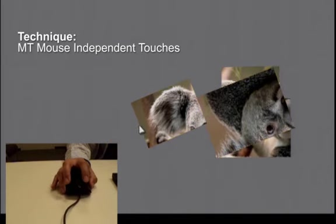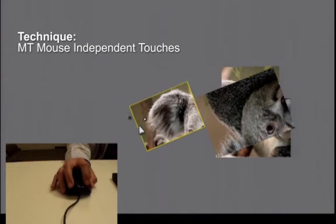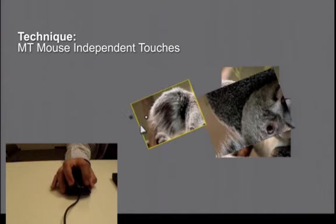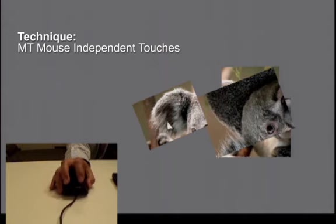However, this also means that the user can sometimes inadvertently place one contact on an object when they meant to use two, resulting, for example, in the object translating rather than rotating or scaling.